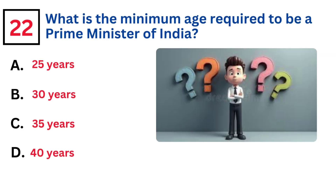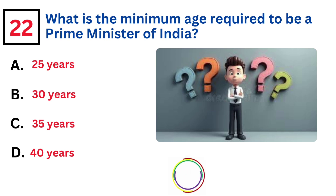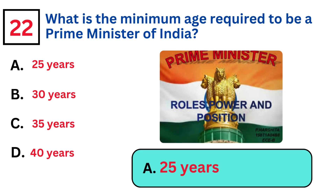What is the minimum age required to be a Prime Minister of India? Answer A. 25 years.